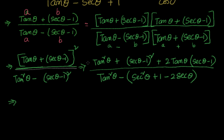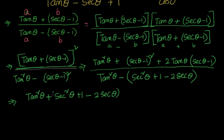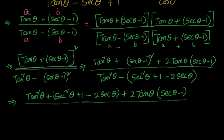Now let us simplify the denominator. The denominator has (sec θ − 1)² which is a minus b whole squared, expanding as a² + b² − 2ab, giving sec²θ + 1 − 2 sec θ. So the denominator becomes tan²θ − sec²θ − 1 + 2 sec θ.